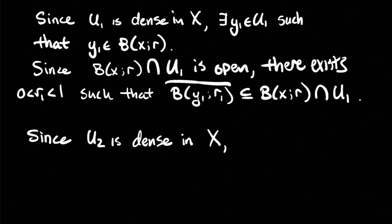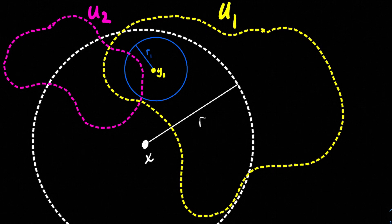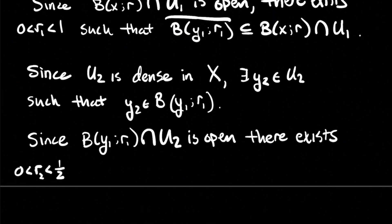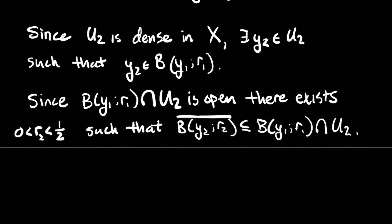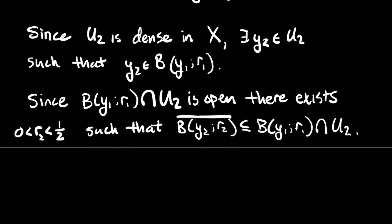Now we play the same game with U_2, which is also assumed to be dense in X. There exists Y_2 in U_2 such that Y_2 is in the ball centered at Y_1 of radius R_1. Since we have the intersection of two open sets — the ball centered at Y_1 of radius R_1 and U_2 — we can find a smaller radius R_2, taken smaller than 1/2, such that the closure of the ball centered at Y_2 of radius R_2 is in the previous ball and in U_2.